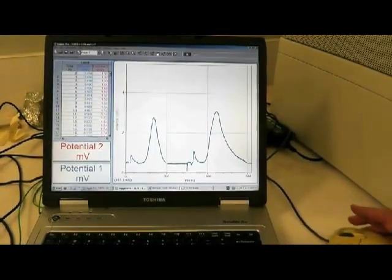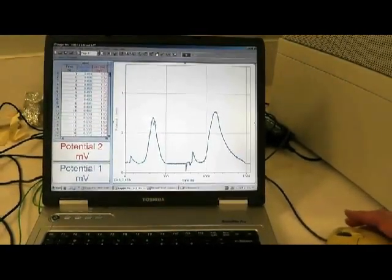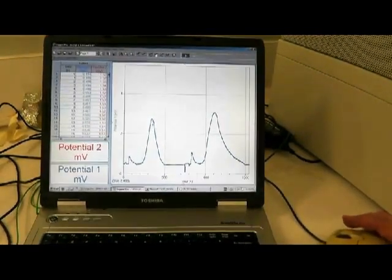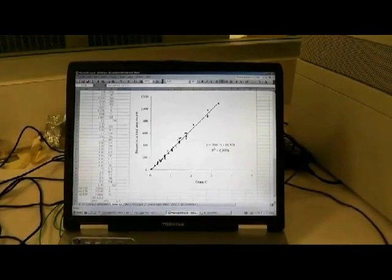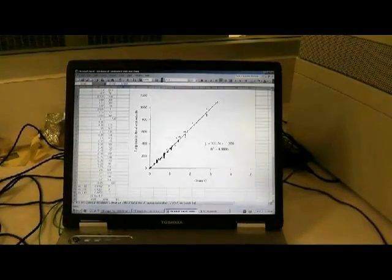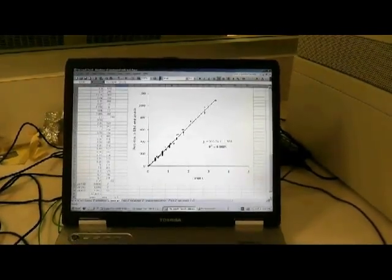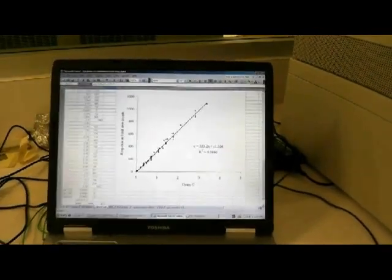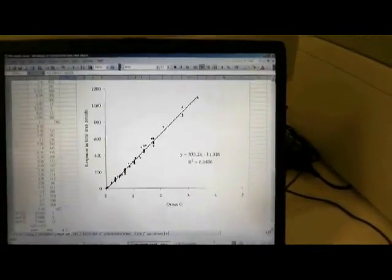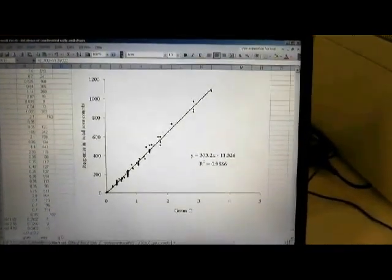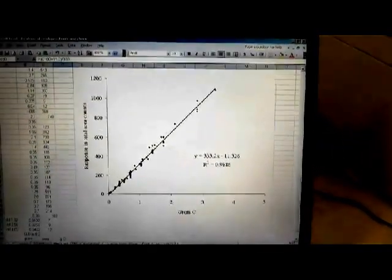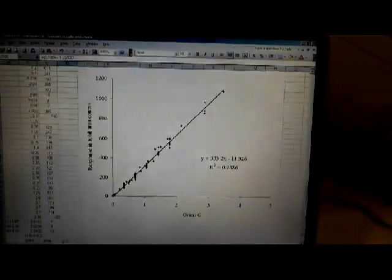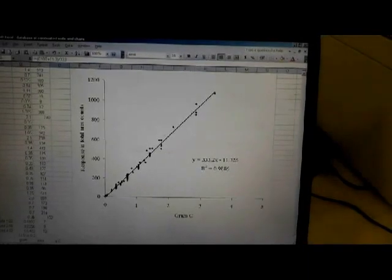The area of this peak is proportional to the amount of carbon in the organic matter within the core. We take the areas and input them into a spreadsheet. They form a calibration if we are using known amounts of carbon. Or we simply read off how much carbon is in the core based on the function derived from the calibration chart.